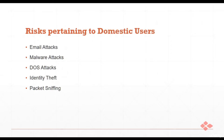Risks pertaining to domestic users: as the world goes digital, domestic users are susceptible to different kinds of attacks. The first is email attacks — the victim is susceptible to phishing, spamming, or other scams. Next are malware attacks — emails are the biggest carriers of malware, making it the second major attack type domestic users face.